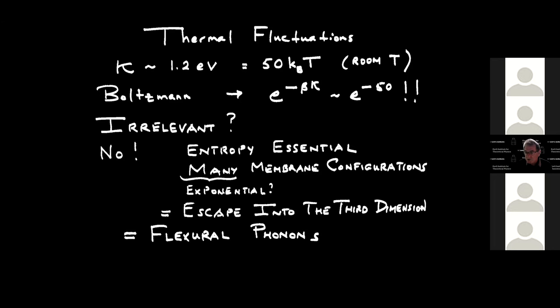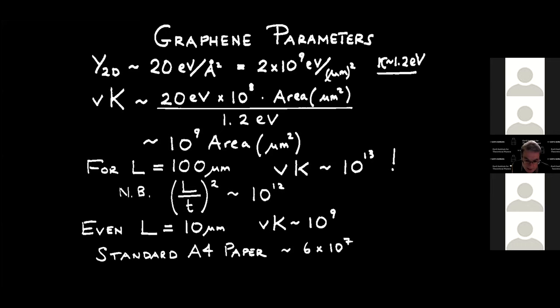Let's look at graphene parameters. The Young's modulus of graphene is quite high: 20 eV/Å², or 2.2 × 10⁹ eV/μm². The von Kármán number is about 10⁹ times the area in square microns. For a 100-micron ribbon, you get a von Kármán number of 10¹³. The dimensional argument L/t² gives a comparable number of order 10¹². Even L = 10 microns gives a von Kármán number of order 10⁹.